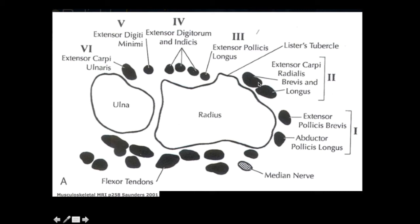We then see the second dorsal compartment made up of the extensor carpi radialis brevis and extensor carpi radialis longus. We then have Lister's tubercle. In the third compartment we have the extensor pollicis longus, which will travel from medial to lateral and cross Lister's tubercle as well as the second compartment as we extend distally. The fourth dorsal compartment is made up of the extensor digitorum and extensor indicis. The fifth compartment is the extensor digiti minimi, and the sixth compartment is the extensor carpi ulnaris.